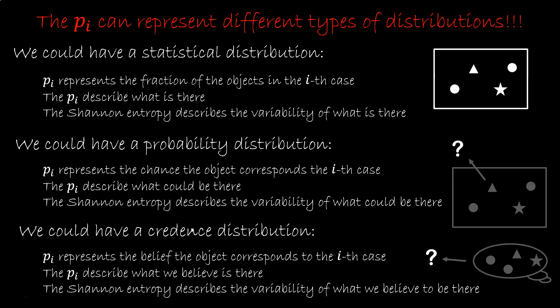We could also have a credence distribution. We have one object, and we believe it has this or that property. For example, I have 66% confidence that the atom in the trap is hydrogen. These are distinct cases talking about slightly different things.